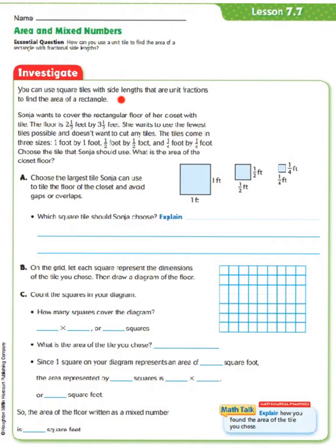So, we're going to be looking at our investigate. You can use square tiles with side lengths that are unit fractions to find the area of a rectangle. Let's take a look at our word problem. Sonia wants to cover the rectangular floor of her closet with tile. The floor is 2 1/2 feet by 3 1/2 feet. She wants to use the fewest tiles possible and doesn't want to cut any tiles. The tiles come in three sizes: 1 foot by 1 foot, 1 1/2 foot by 1 1/2 foot, and 1 1/4 foot by 1/4 foot. Choose the tile that Sonia should use. What is the area of the closet floor?